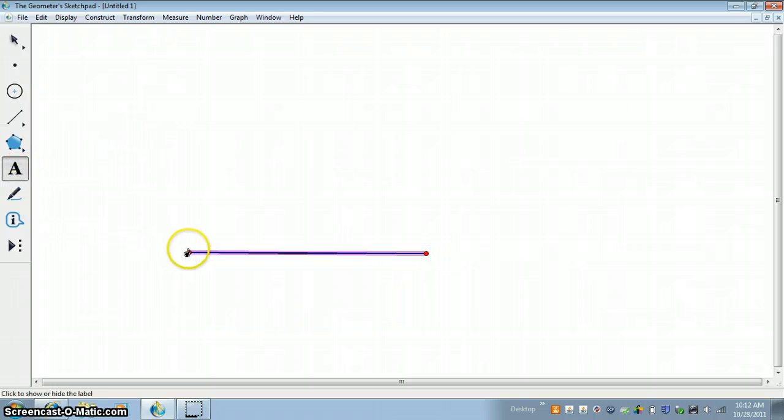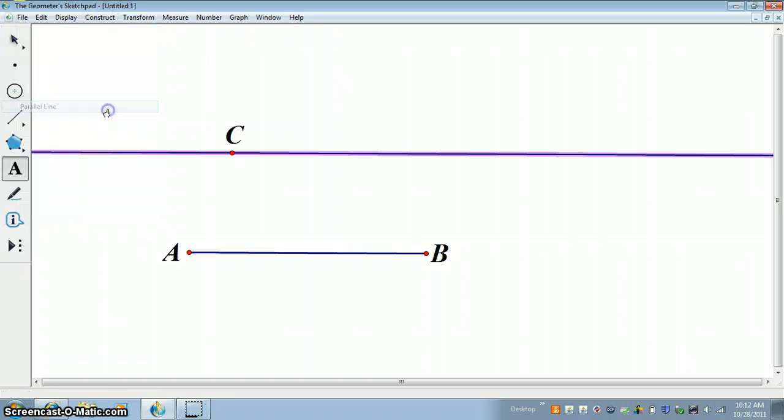So here we have a segment, segment AB, and we're going to construct another segment parallel to this one through this point, and this is point C. So I'm going to go up here and construct a parallel line, and now I'm going to connect points C and A, so we have a line there, and now I want to construct another line through point B and parallel to segment CA.